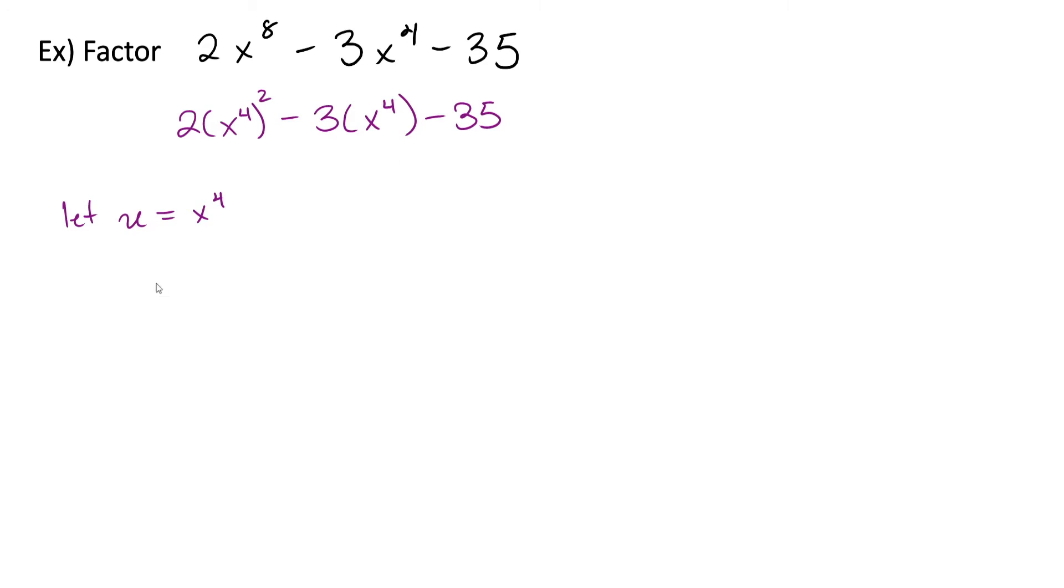Now we'll rewrite this expression as 2u squared minus 3u minus 35. Now this looks a lot more like the trinomials we're used to seeing and we can factor this using the AC method.